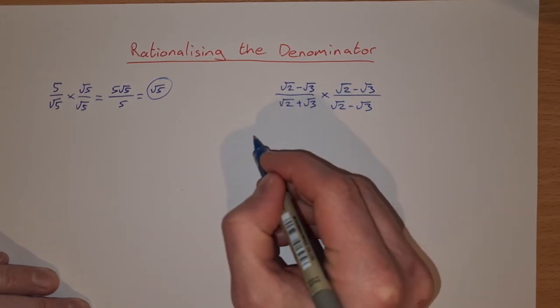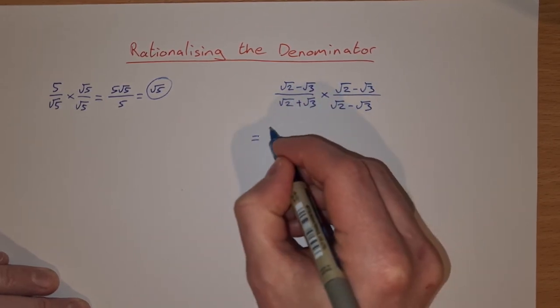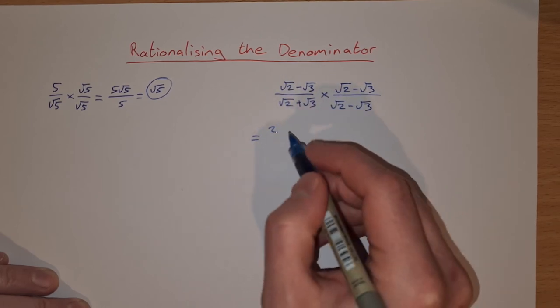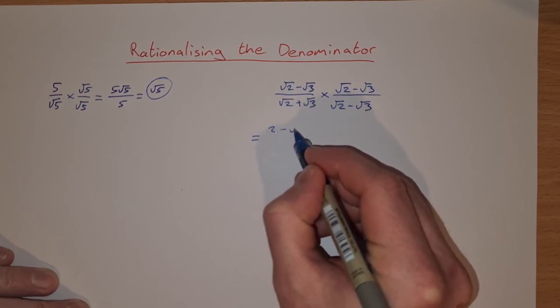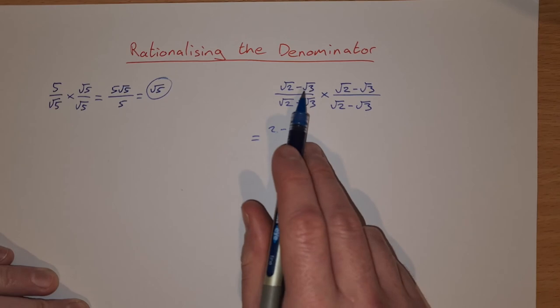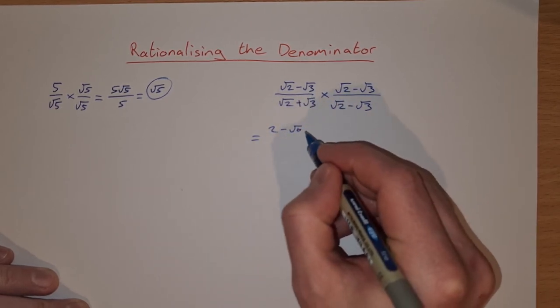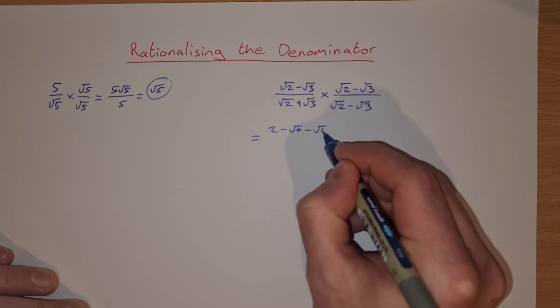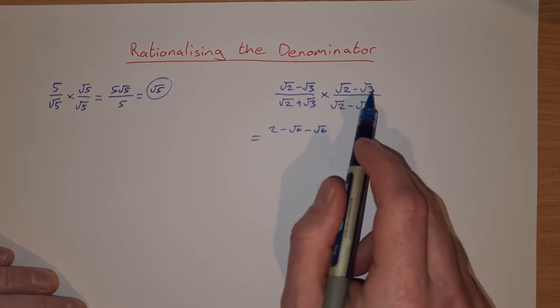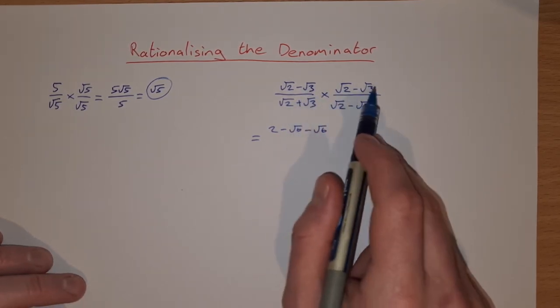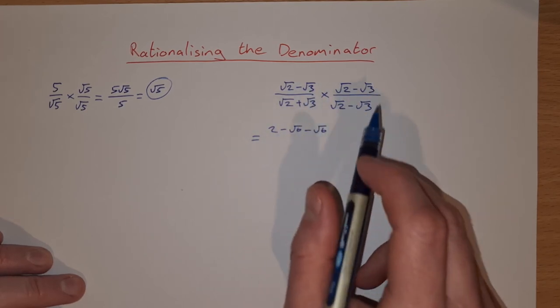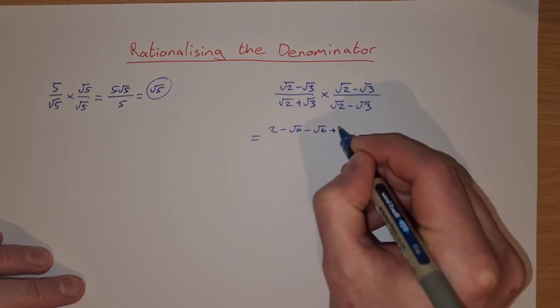So root 2 by root 2 will give us 2. Root 2 by minus root 3 will be minus root 6. Minus root 3 by root 2 is minus root 6 again. Minus root 3 by minus root 3—minus by minus is a plus. Root 3 by root 3 is 3, so that's plus 3.